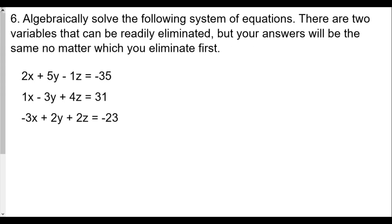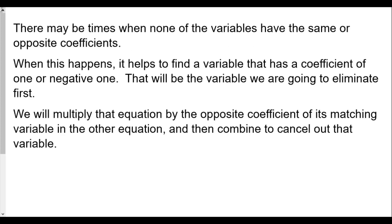So now we take a look here. This is algebraically solve the system of the following equations. There are two variables that can be readily eliminated, but your answers will be the same no matter which you eliminate first. In this situation, none of the variables x, y, z have the same or opposite coefficients, so it's hard to pick. However, we do have a step we can follow: when none of the variables have the same or opposite coefficients, it helps to find a variable with a coefficient of one or negative one — that'll be the variable we eliminate first.